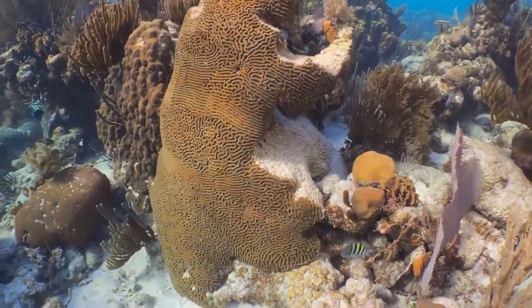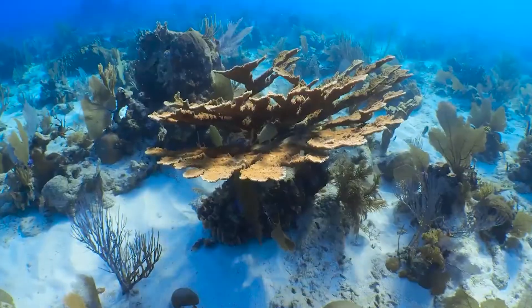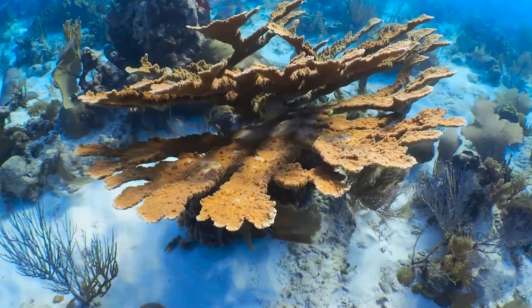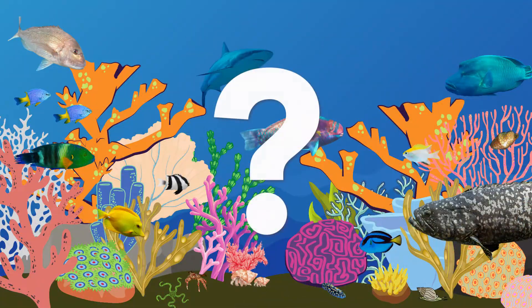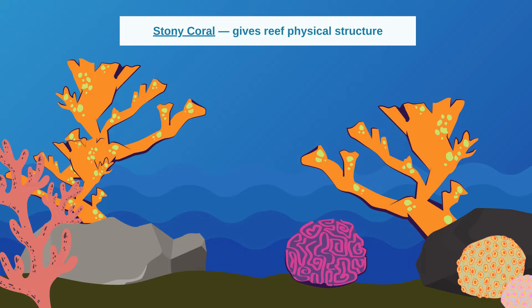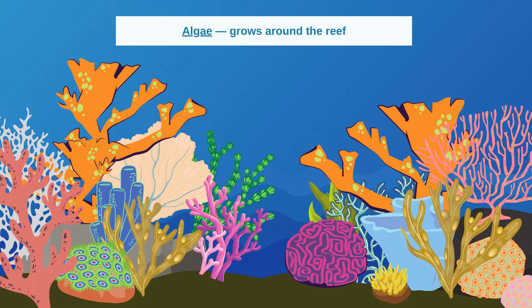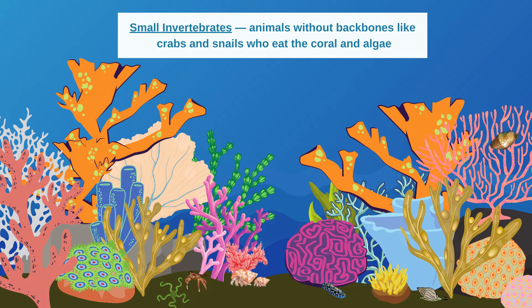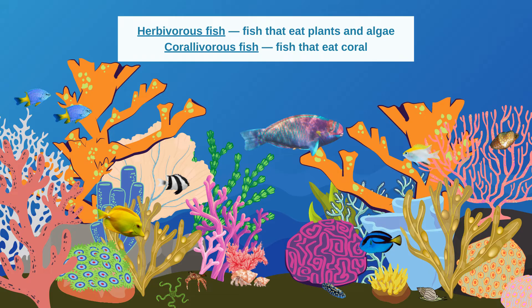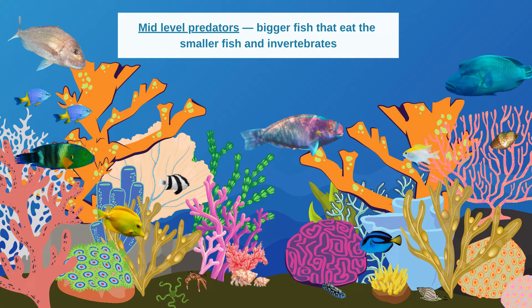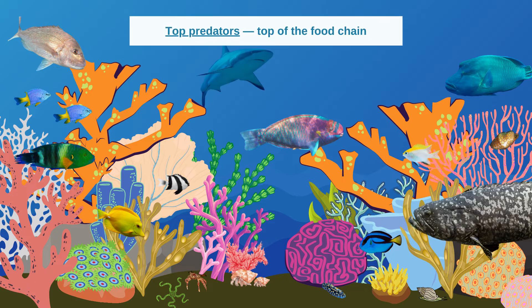Coral reefs are complex habitats that are home to many different marine species. Let's recap the different groups of plants and animals that make up a coral reef ecosystem. To start, stony coral make up the reef foundation, and then the soft coral and sponges add to the structure. The algae adds to the structure and is a food source. Small invertebrates eat the coral and algae. The herbivorous fish and corallivorous fish eat the coral and algae to maintain structure. Mid-level predator fish eat the smaller animals. And finally, the top predators maintain balance in the food chain by feeding on other reef species.